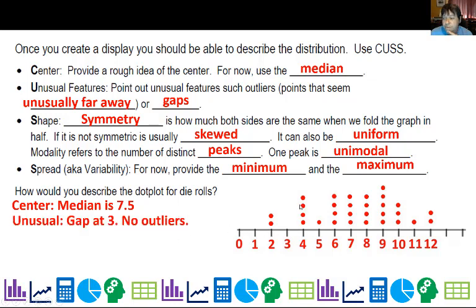Now unusual, we do have a gap at three, but we don't really have any outliers. You might be tempted to say, well, two is an outlier. I'm not so sure it's that far away from all the data. The outliers usually mean unusually far away.